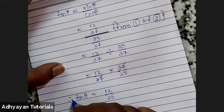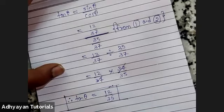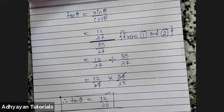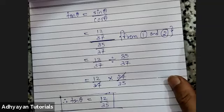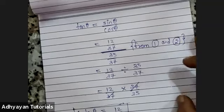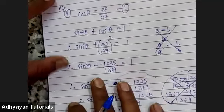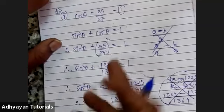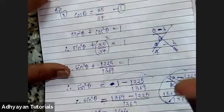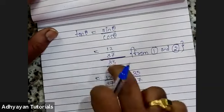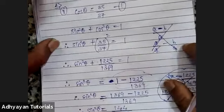That is the second method for the same sum. I have shown you both methods. Certain school teachers are adamant on triangle method; certain teachers insist on the second method. I've taught both. You'll get full marks either way. Both methods are applicable in 10th, though majorly the identity method is followed in 10th.